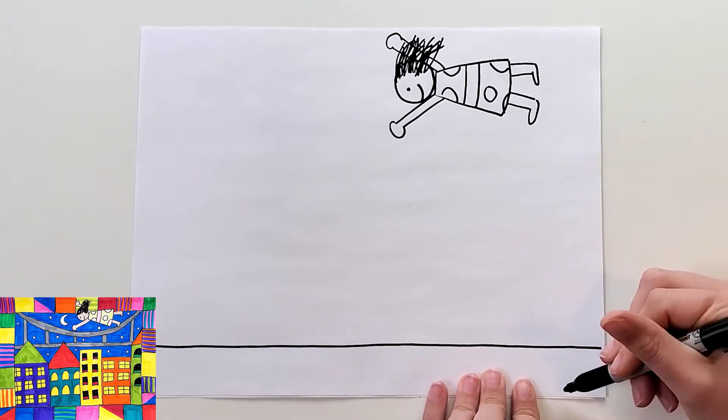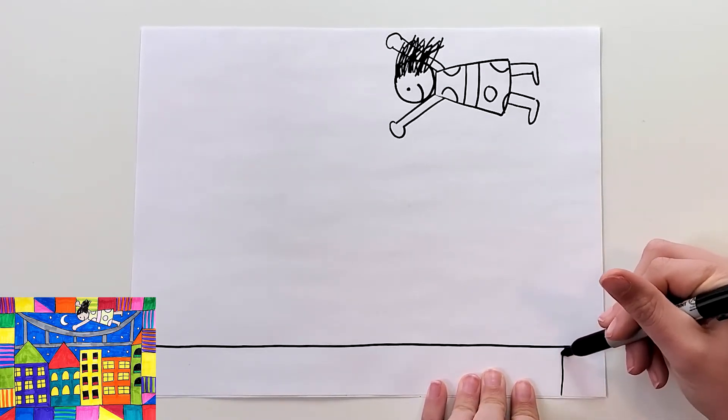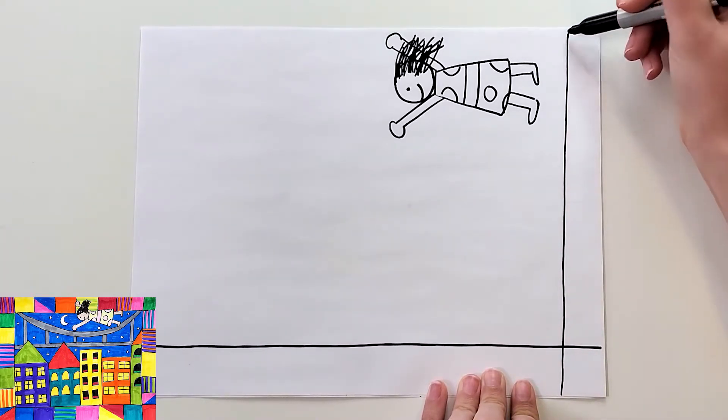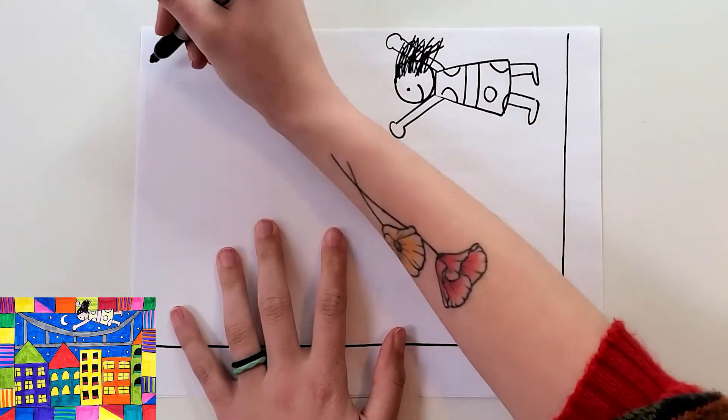Then on the side, I'm going to do the same thing. Start about an inch over, very carefully, very slowly, draw a line all the way up. Then I'm going to do the same thing on the top.